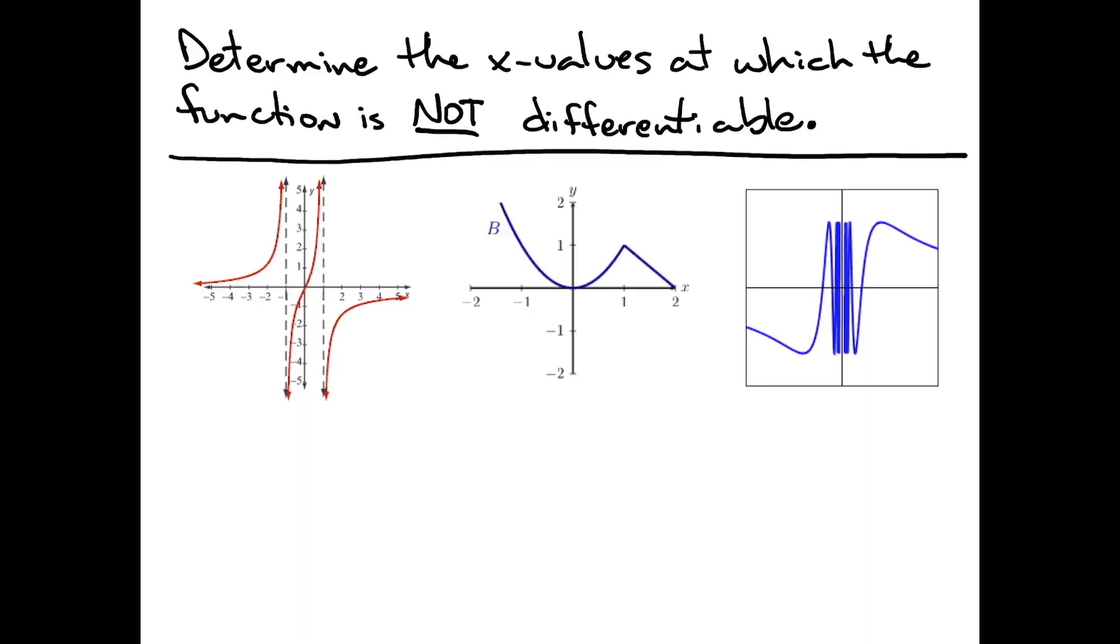At x equals negative one and x equals one, you can see that the function goes to either positive infinity or negative infinity around those vertical asymptotes. So the x values at which this first function is not differentiable is at x equals plus or minus one, because of the infinite discontinuity or essential discontinuity located there.